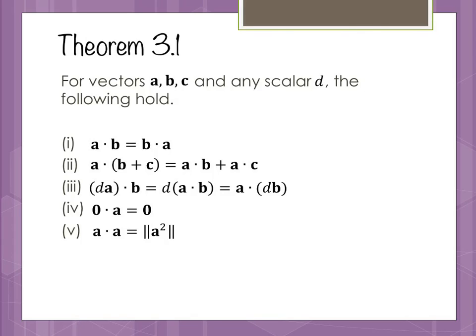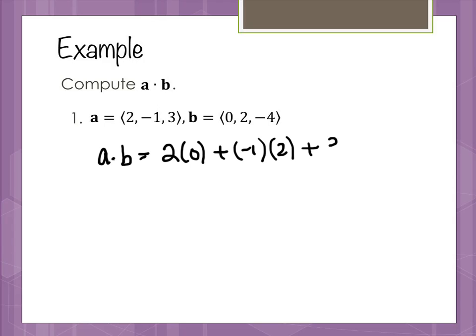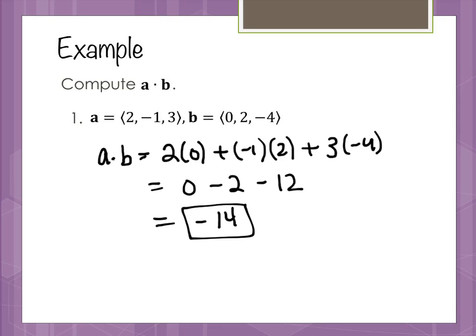We're going to practice one of these. We have vector a and vector b given, and we're going to find the dot product — just multiplying component-wise. This is 2 times 0, plus negative 1 times 2, plus 3 times negative 4, which gives me 0 minus 2 minus 12, or negative 14. So the dot product for this particular set of vectors a and b is negative 14.